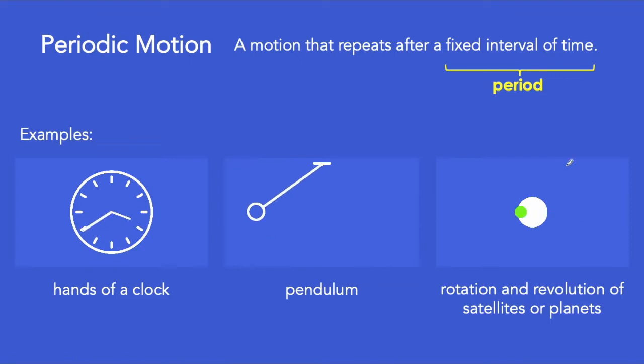So what is a periodic motion? A periodic motion is any type of motion that repeats after a fixed interval of time, and this interval of time is called period.